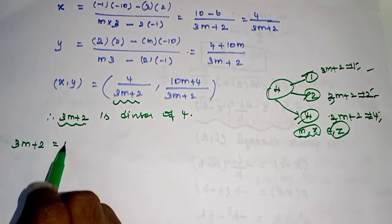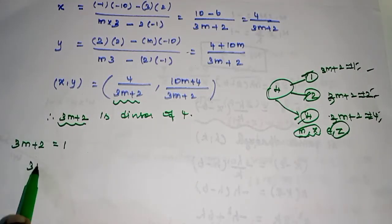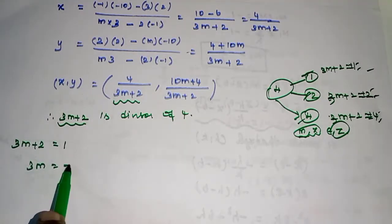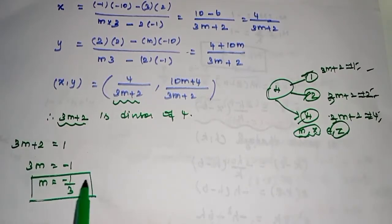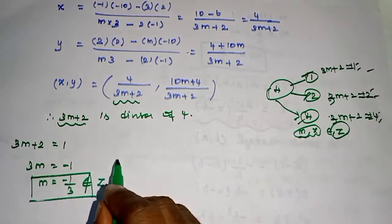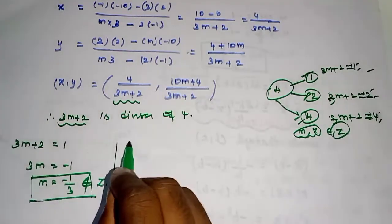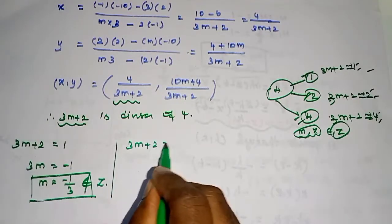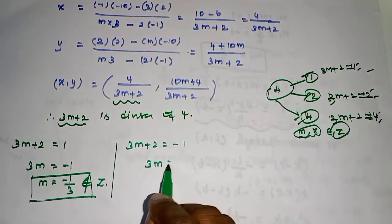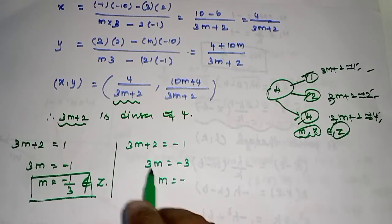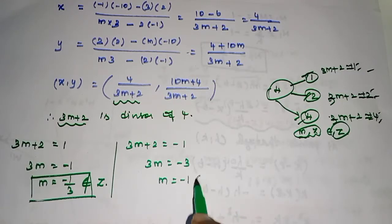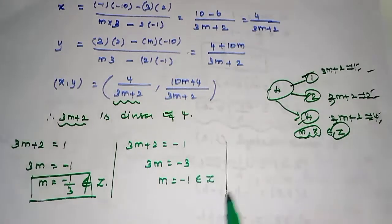First, choose 3m + 2 = +1. So 3m = −1, giving m = −1/3. Since −1/3 is not an integer, this case is not applicable. Next, choose 3m + 2 = −1. So 3m = −3, giving m = −1. Since −1 is an integer, this case is applicable.